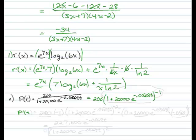So, p prime of t, we're going to have the 200. Now we're going to start our chain rule. So, first is derivative of the outside. So, first thing we've got to do is pull that exponent out front. So, negative 1 times, we leave the inside alone, 1 plus 20,000, e to the negative 0.0569t. Raised to the negative 2, decrease the power by 1.